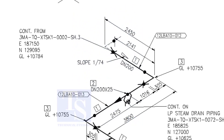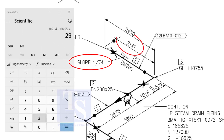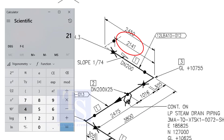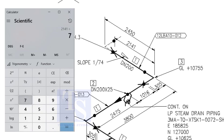Let us check with the slope ratio — 1 is to 74. Divide 2,141 by 74. The answer is 29 millimeters. I hope you learned two methods to calculate the slope of a pipe.